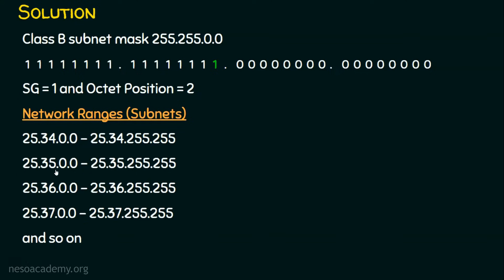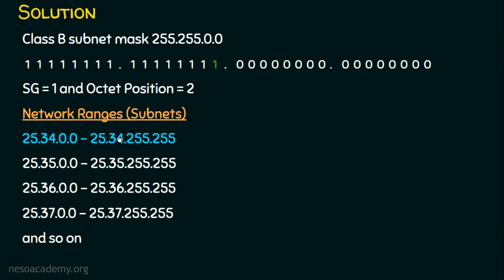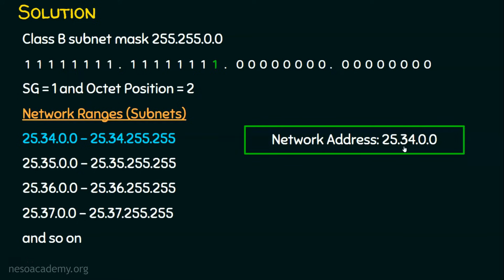What about the last IP address in the first subnet? Since the second subnet's first IP address is 25.35.0.0, the previous address is 25.34.255.255. If you are unsure, convert everything to binary, add 1 to the last position, and you'll get this result. Similarly, the second subnet ends with 25.35.255.255 because the next subnet starts with 25.36. The IP address from the question falls in the first subnet. The first address is the network address, and the last is the broadcast address. The network address for this question is 25.34.0.0.